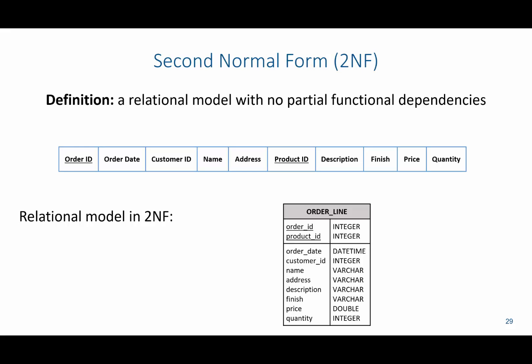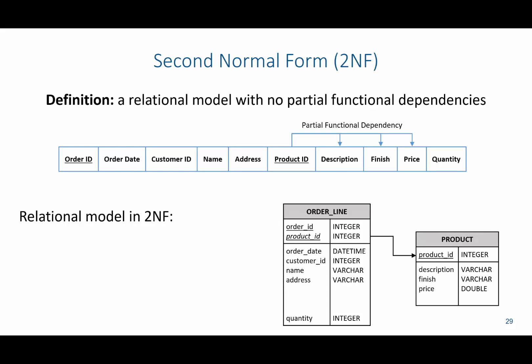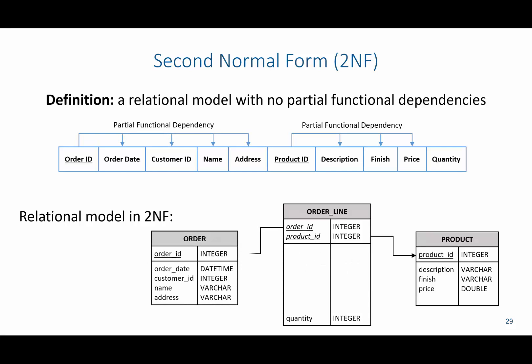Now we're going to move to second normal form by removing partial functional dependencies. We need to identify the partial functional dependencies, which we found previously: product ID determines description, finish, and price. To remove partial functional dependencies, we take A — which is product ID — and everything it determines and put it in its own separate relation. Product ID, description, finish, and price are now in the product relation. We keep product ID in the original order line relation as a foreign key, and do the same thing with order ID, creating a new order relation.